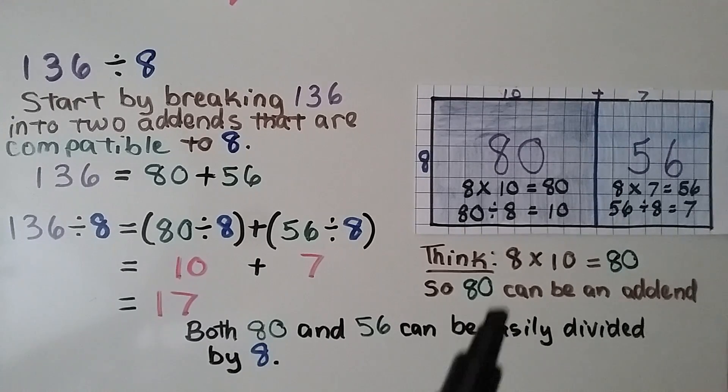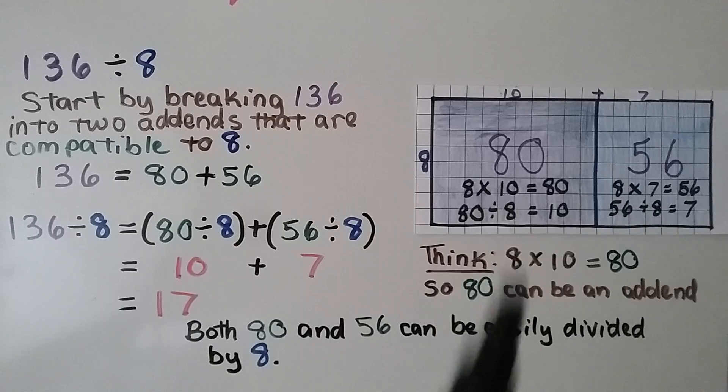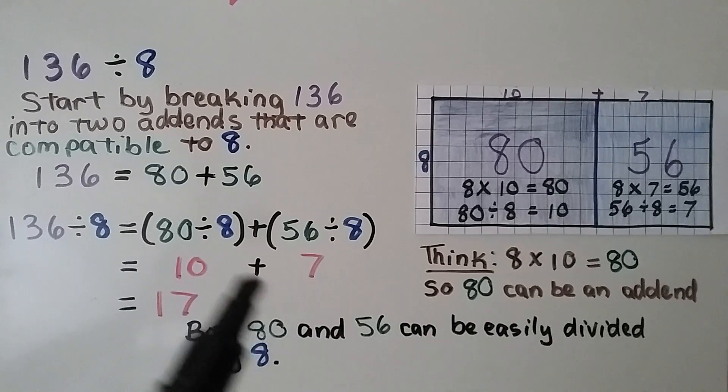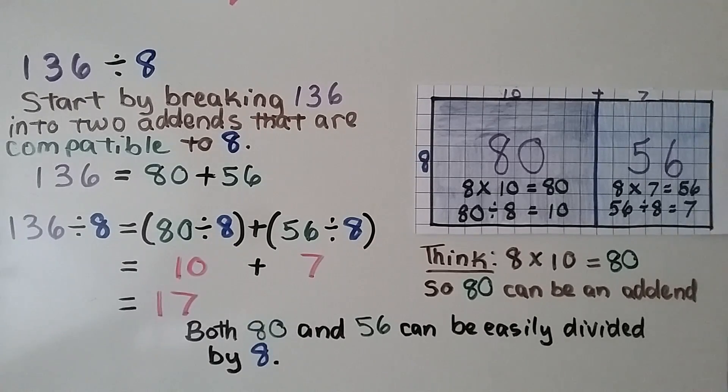We think 8 times 10 is 80, so 80 can be one of the addends. That would be an easy addend. So both 80 and 56 can be easily divided by 8. They were a good choice to use for our addends.